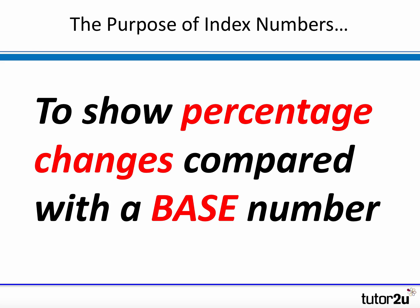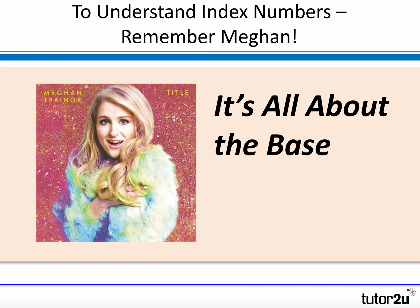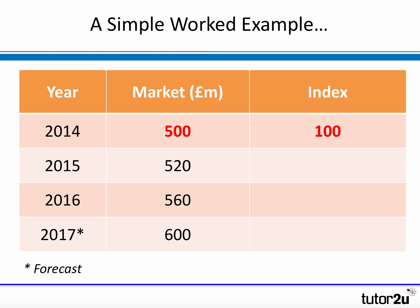Let's go through the calculations. The most important thing to remember is that index numbers are there to help you calculate percentage changes — they show the percentage change in data compared with the base. With index numbers, it's all about the base figure. Let's take a look at this simple example. I've taken 2014 as my base year, where the market size is valued at £500 million, and my index is 100. The index base will always be 100 in the exam.